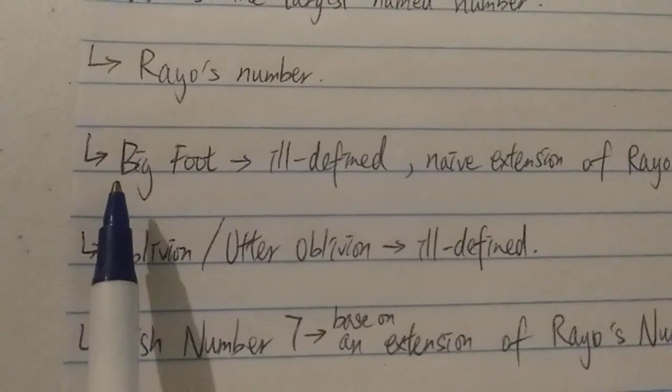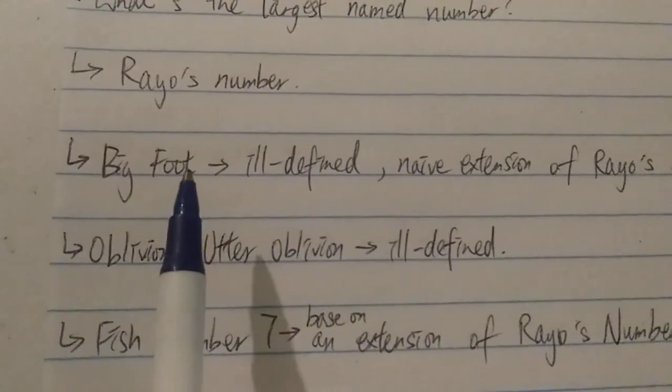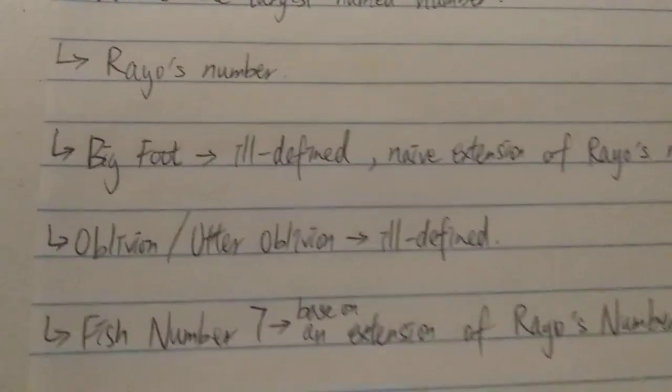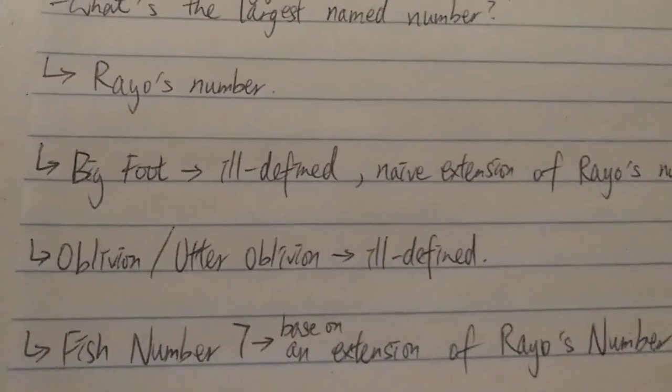Second, we have the Bigfoot. It was also considered to be the biggest named number for some time.